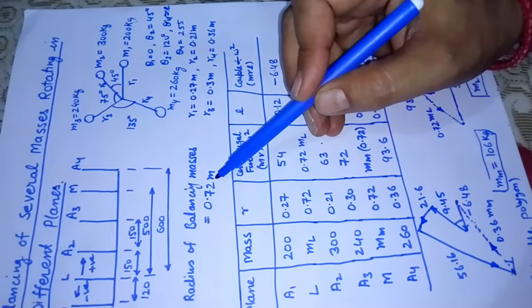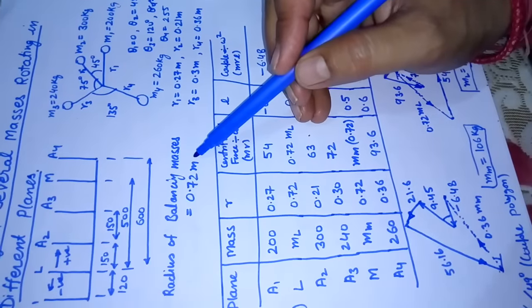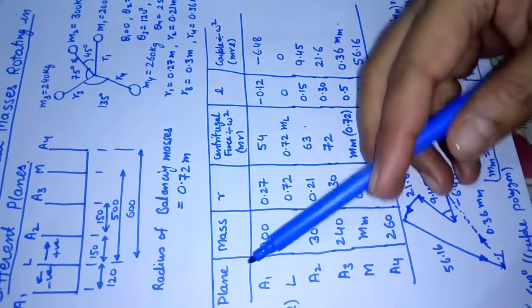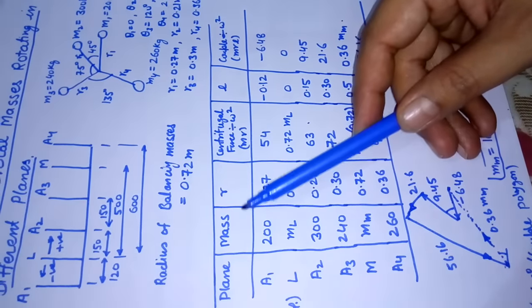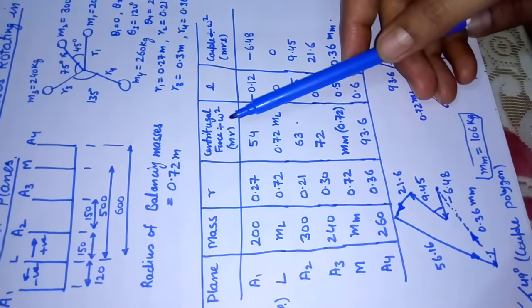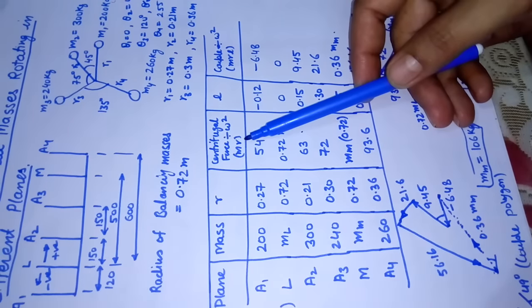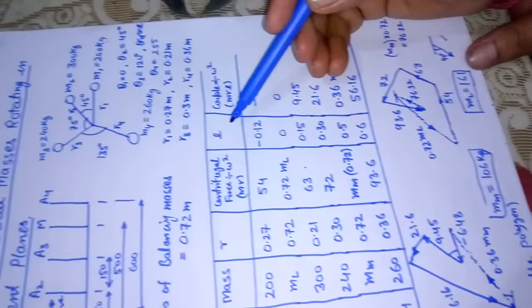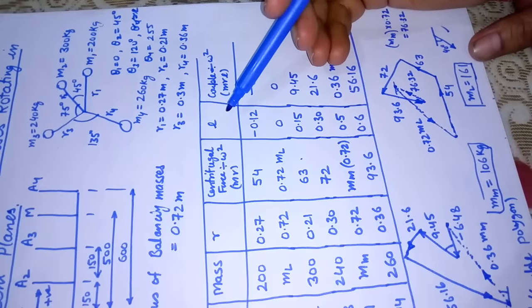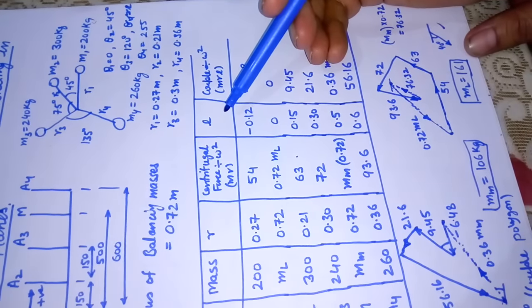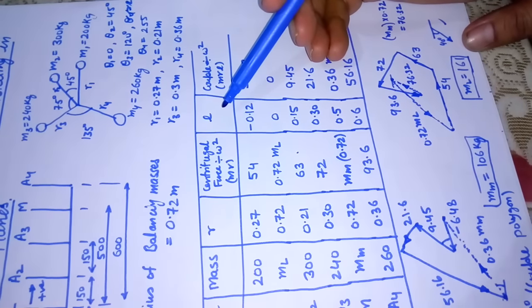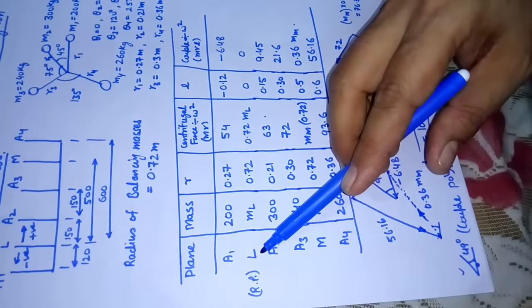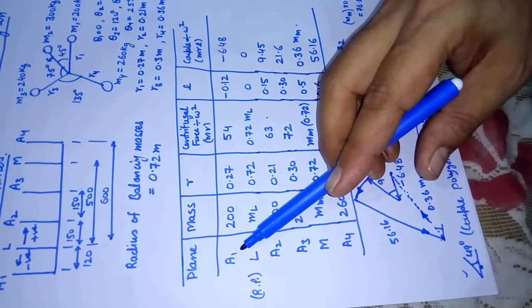How to solve it graphically is what we wish to discuss. First of all, we will make the table. The table will have components like plane, mass, radial distance, centrifugal force divided by omega square will give us the term mr. Then l is the distance of a plane from reference plane. We are supposed to select either plane l or m as a reference plane. We have picked plane l as the reference plane.